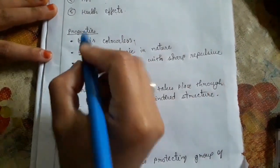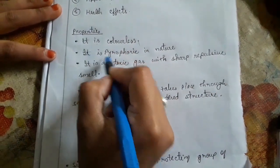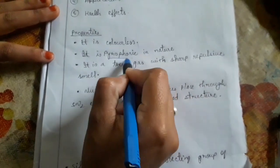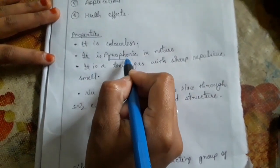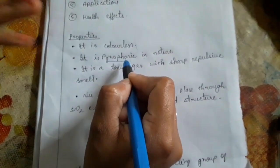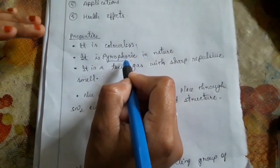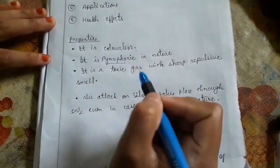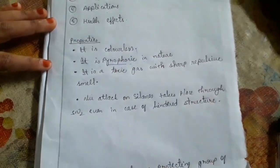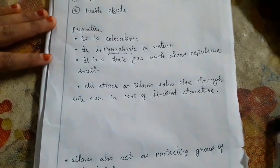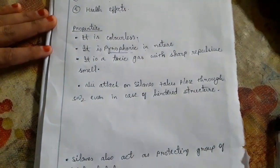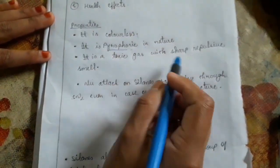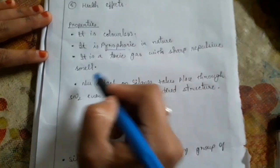The second property is that it is pyrophoric in nature. Pyrophoric means it ignites spontaneously or explodes spontaneously when it comes in contact with air. The third property is that it is a toxic gas with a sharp, repulsive smell.